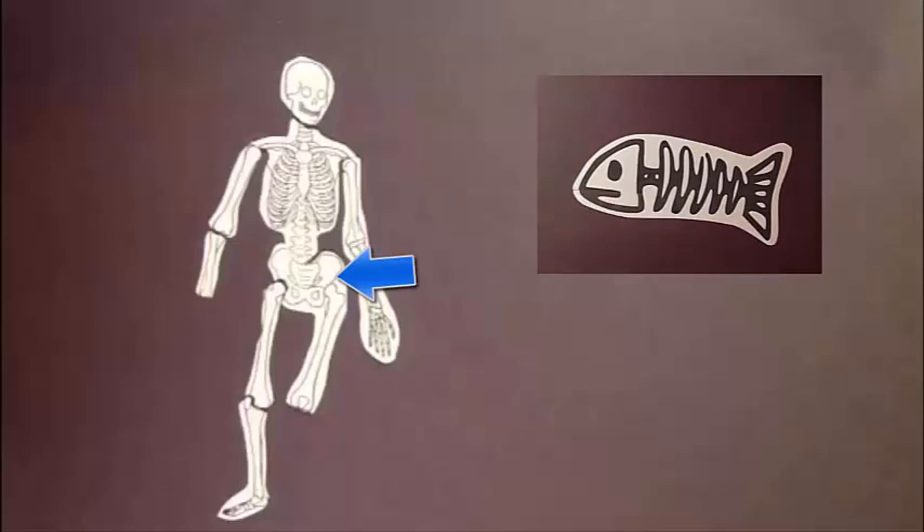Only animals that walk upright on two legs have these long thigh muscles, and therefore need big bumps to anchor those muscles in place.